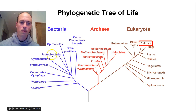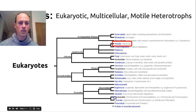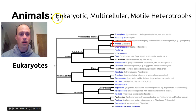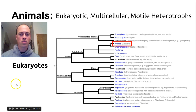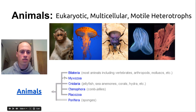Let's take a look at our phylogenetic tree of life. We've learned about the prokaryotic domains, and we are inside the eukaryotic domain, learning about animals — those complex, wondrous individuals. There are a lot of different species of animals, but they are all eukaryotic, multicellular, motile heterotrophs.